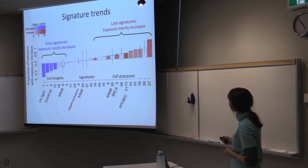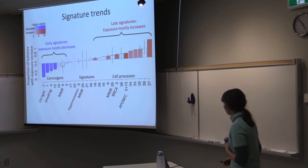And then on the right, we see late signatures, so those whose exposure was increasing over time. And those happen to be cell processes, such as MMR, BRCA, and also APOBEC.